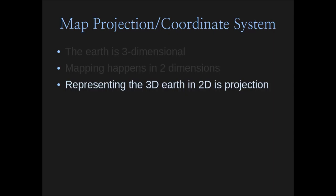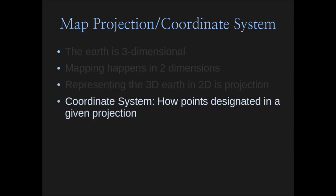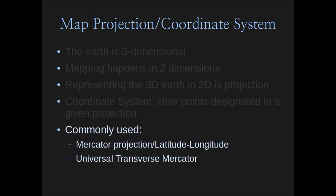We also have a coordinate system — how points are designated in a given projection. Projection is the process of taking this three-dimensional structure and plotting it on two dimensions; there are different methods. The coordinate system is how we designate points onto that projected surface. Commonly used ones include the Mercator projection with the latitude-longitude coordinate system, which is really common but also really distorted especially as you go towards the poles.